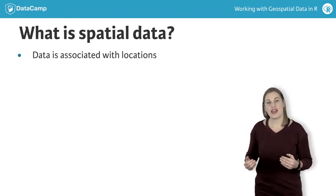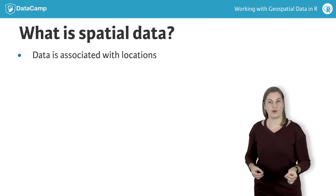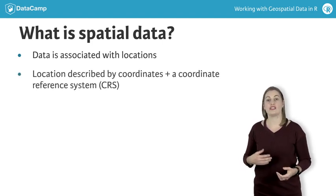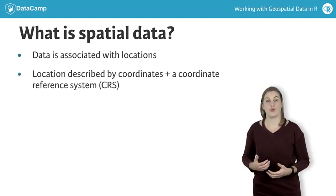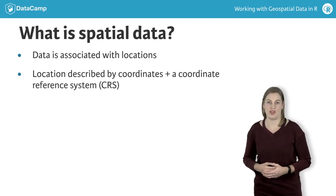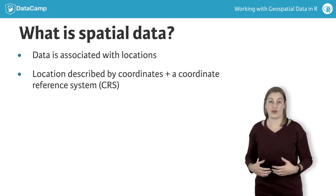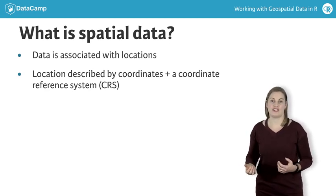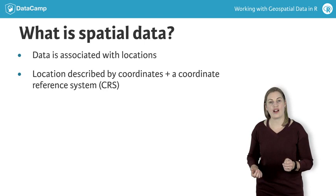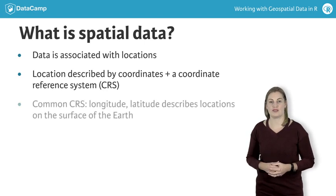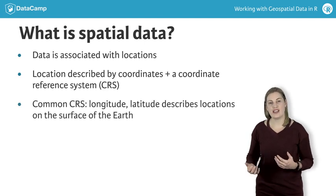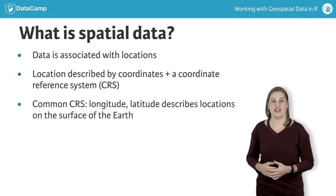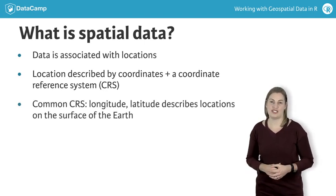A location is most unambiguously described by a set of coordinates and a description of what coordinate system is being used. You are already familiar with one coordinate reference system, geographical coordinates — the usual latitude-longitude pairs used to specify where something is on the globe.